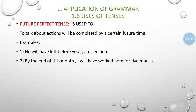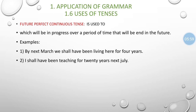Future perfect tense indicates an action which will start in the future and be completed in the future. For example: 'By the end of this month, I will have worked here for five months.' The completion of an action — such as 20 years of work — will be achieved by next July. Such completed future actions are indicated by future perfect tense.